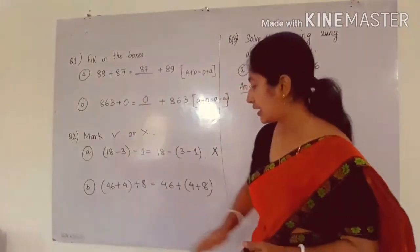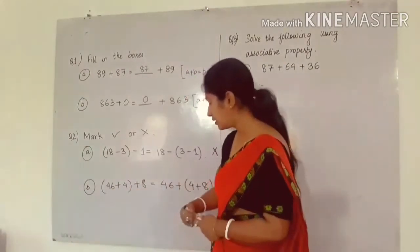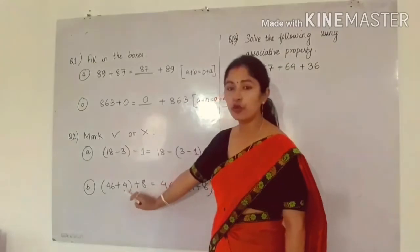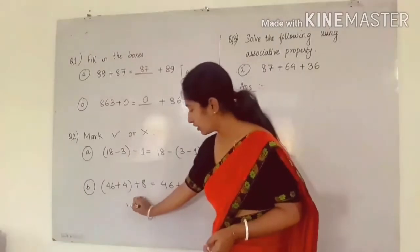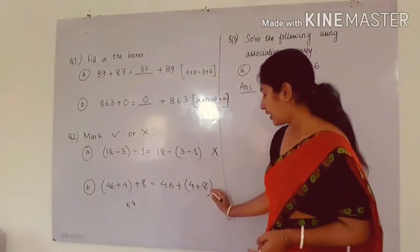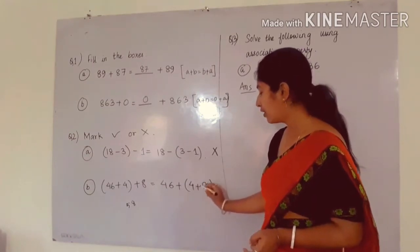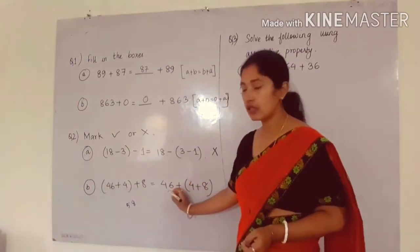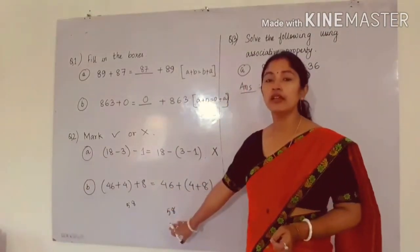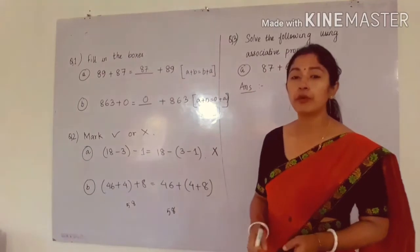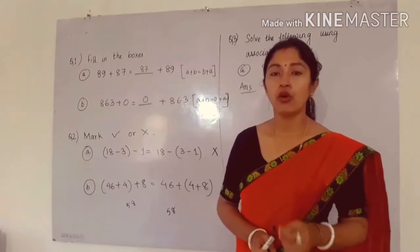In case of addition, we already know that associative property in case of addition of whole numbers is satisfied. If we solve the left hand side: in bracket we have 46 plus 4, so 46 plus 4 will be 50, and 50 plus 8 will be 58. And in the right hand side part, 4 plus 8 is in bracket, so we solve the bracket first: 4 plus 8 will be 12, and 12 plus 46 will also be 58.